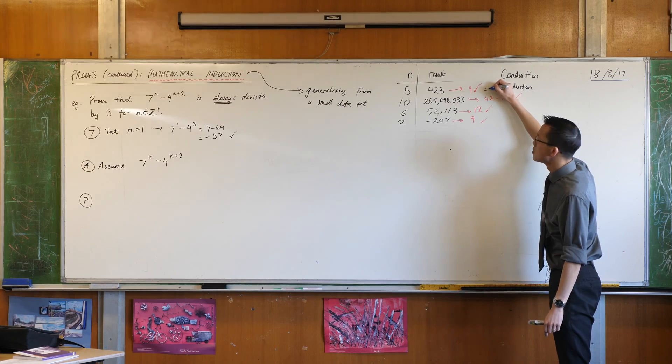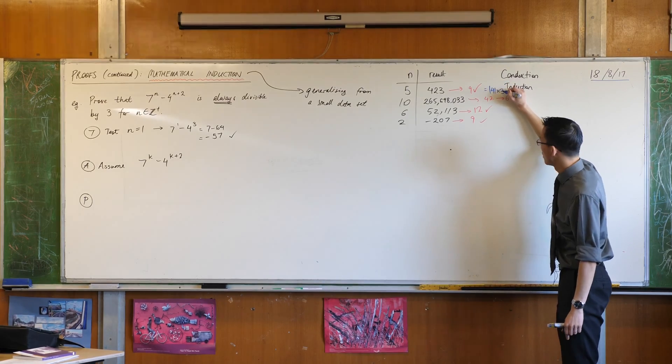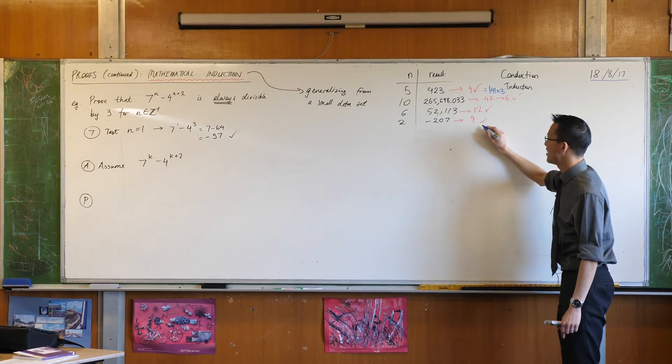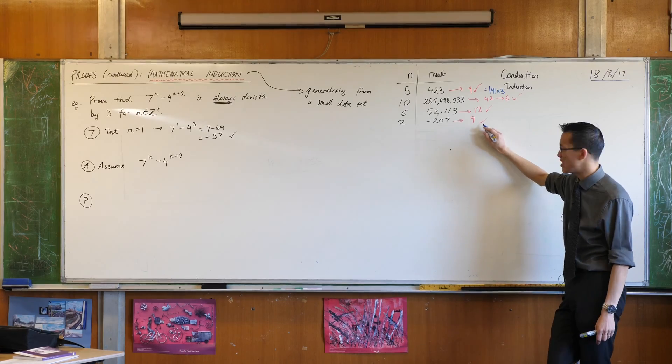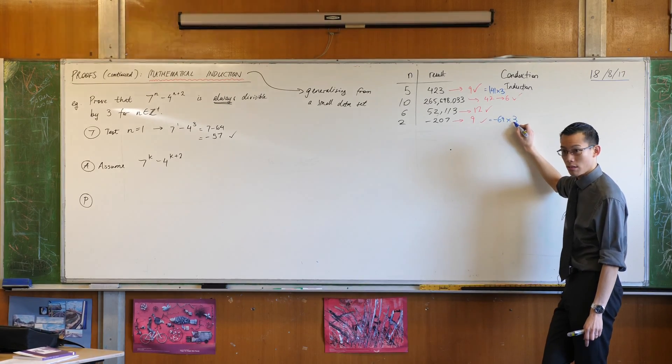141, right? That's 141 times 3. I'm going to skip down to here. 210 is 70, so this is negative 69 times 3, yes?